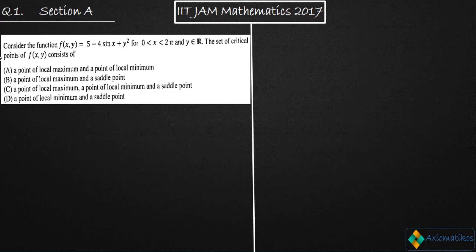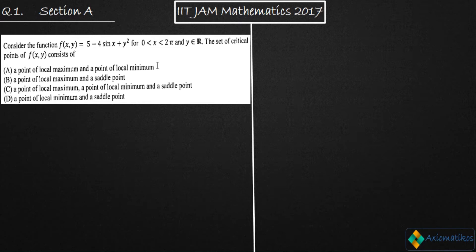We are given a function f(x,y) where x is between 0 to 2π and y belongs to ℝ. The set of critical points of f(x,y) consists of — and the options include a point of local maxima and a point of local minima, a point of local maxima and saddle points, and similar options. The whole question talks about the critical points for this given function f(x,y).